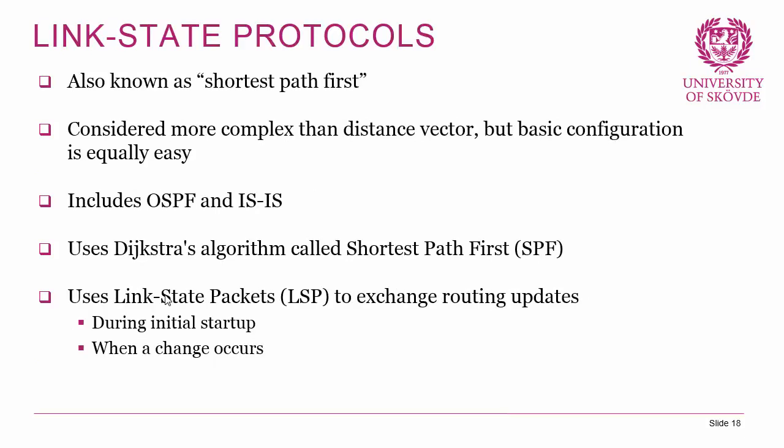With that said, let's go into link state protocols, which are also called shortest path first protocols. They are considered more complex than distance vector protocols, but as we said the configuration is equally easy — the difference in complexity is just that there is more you can do with them. Link state protocols include OSPF, which we'll explore further later in this course, and IS-IS, which is beyond the scope of this course. Both use Dijkstra's algorithm, called shortest path first, which I'll refer to as the SPF algorithm. That algorithm is used to calculate the best path and send updates. It uses link state packets to exchange routing updates, done during initial startup and when a change occurs.